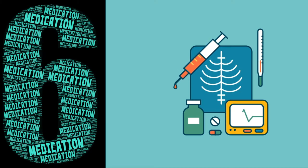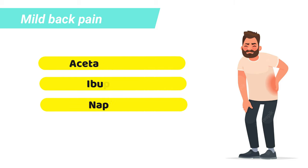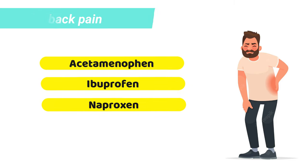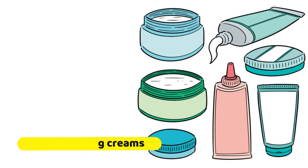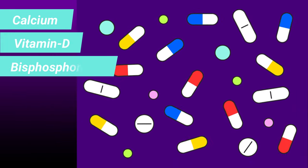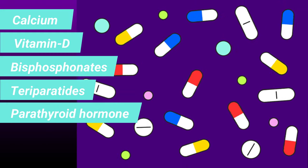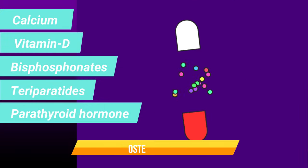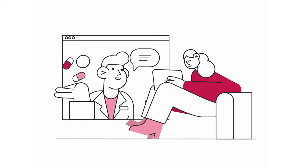Next is medications. Mild back pain often feels better with over-the-counter pain relievers like acetaminophen, ibuprofen or naproxen. You may even try pain-relieving creams for muscle aches. Other medicines like calcium, vitamin D, bisphosphonates, teriparatide and parathyroid hormones may be helpful for treating osteoporosis. Do consult your doctor before you start any medication.